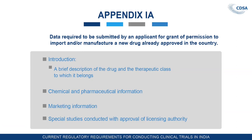The requirements include an introduction, then a brief description of the drug and the therapeutic class to which it belongs, chemical and pharmaceutical information, then marketing information, and special studies conducted with the approval of the licensing authority. Notably, in this appendix the preclinical data is not required.